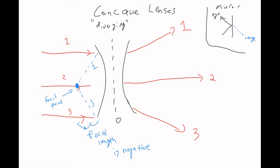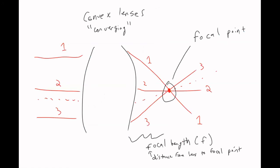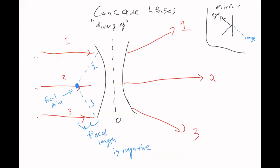To compare the two: for the converging lens, you have parallel lines coming in and they converge on the right-hand side. For the concave lens, you have parallel rays coming in, and on the right-hand side they spread out, so the focal point is on the left-hand side.